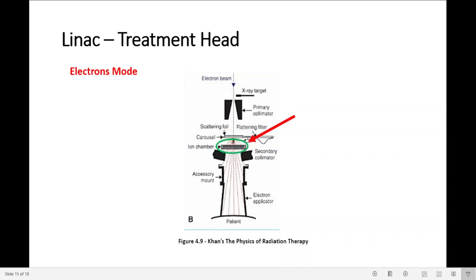Next comes the ion chambers. They are always there as well. They are there to monitor dose rates, integrated dose, and field symmetry. Because electrons scatter readily in air, electron applicators collimate electron beams close to the patient surface, approximately five centimeters away.